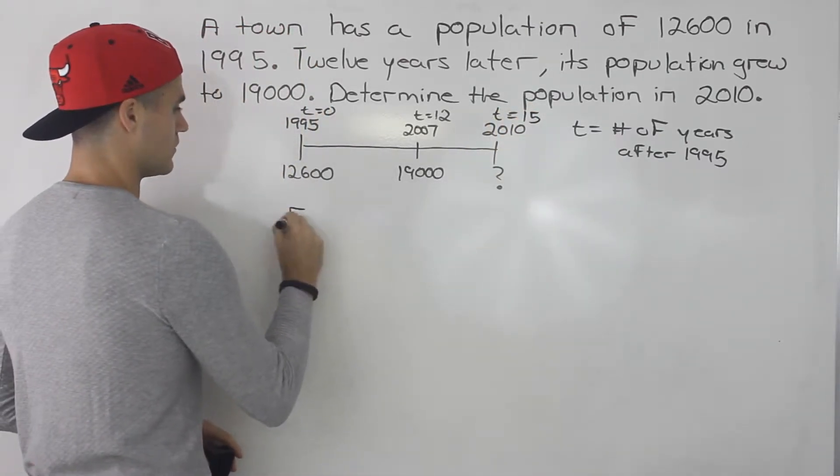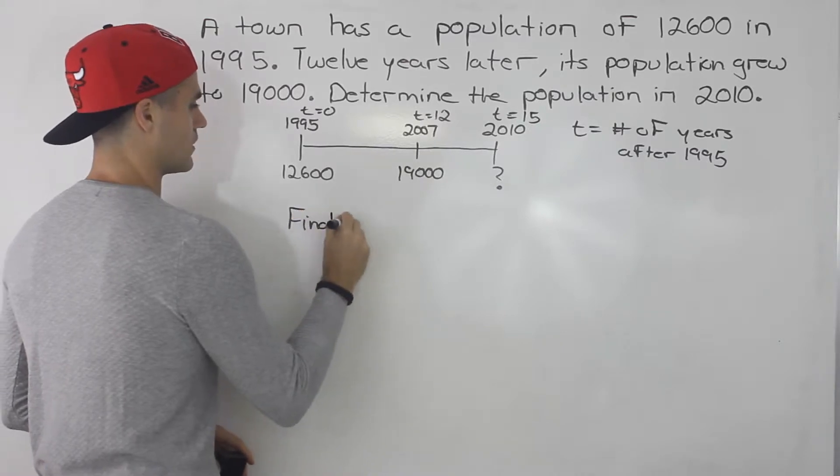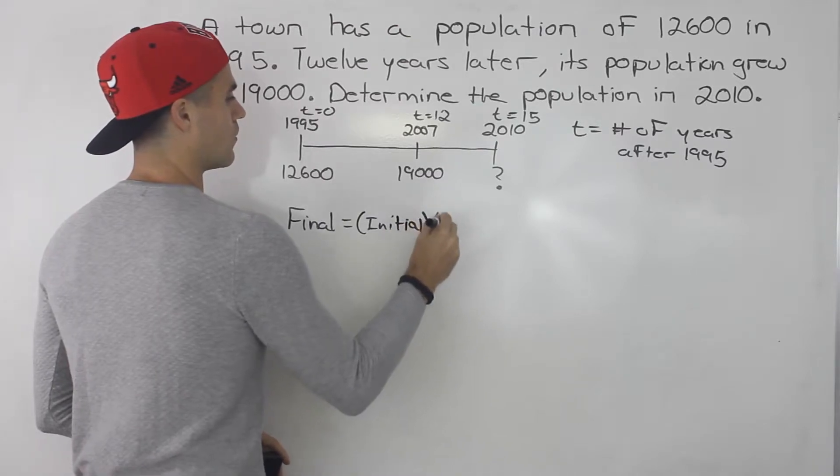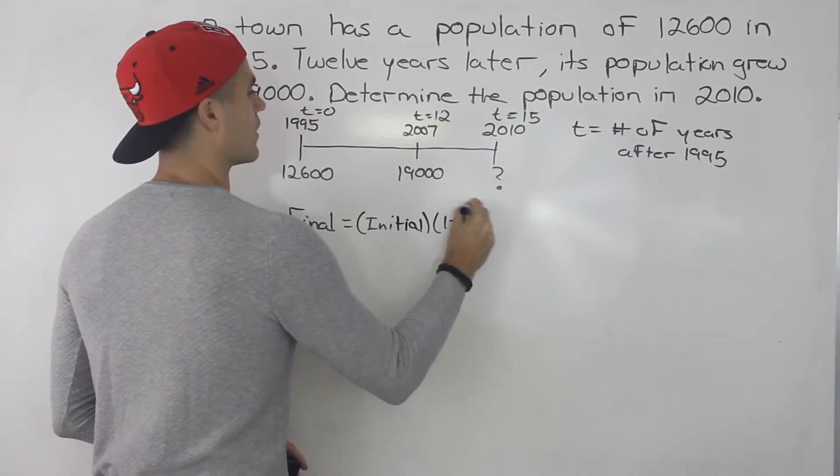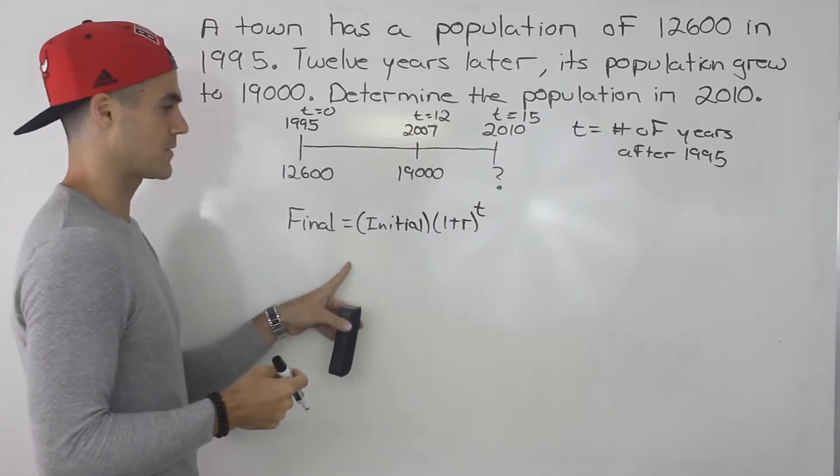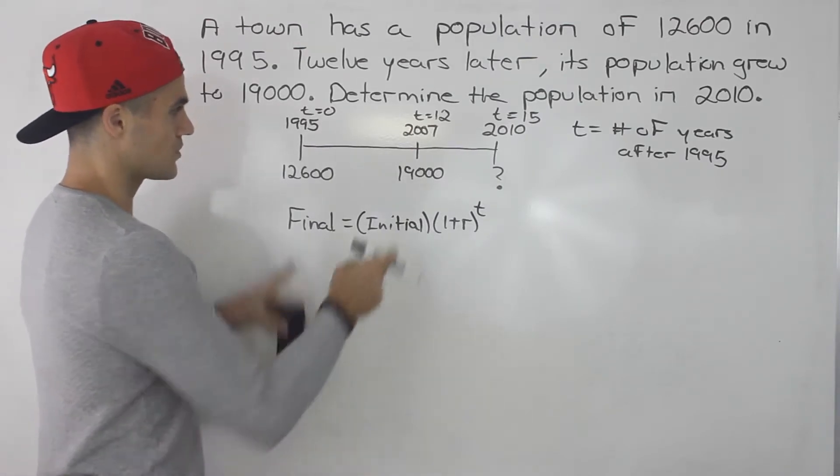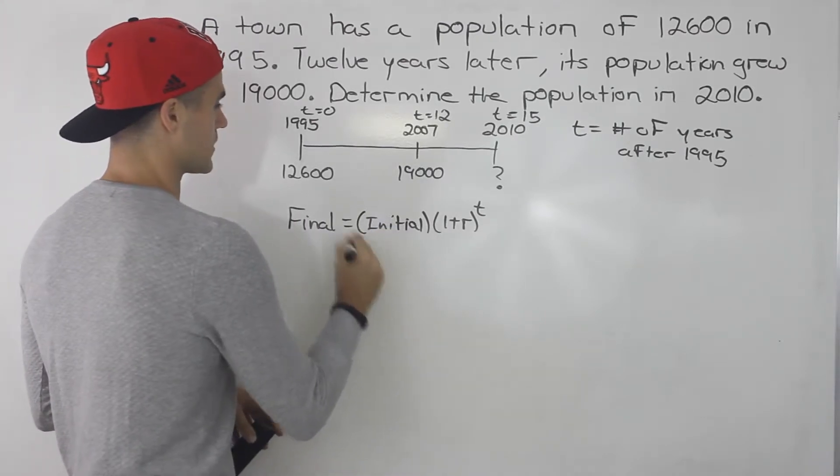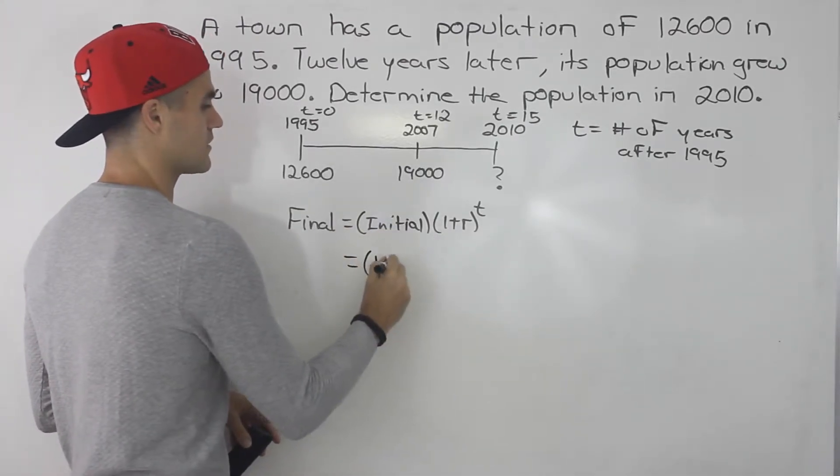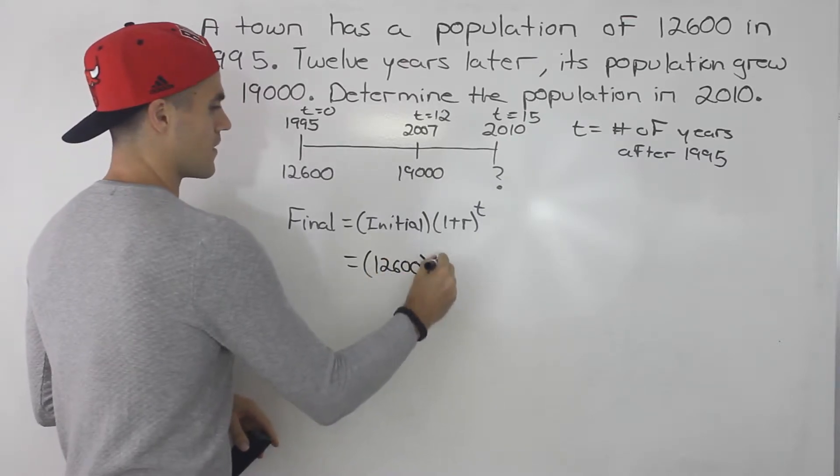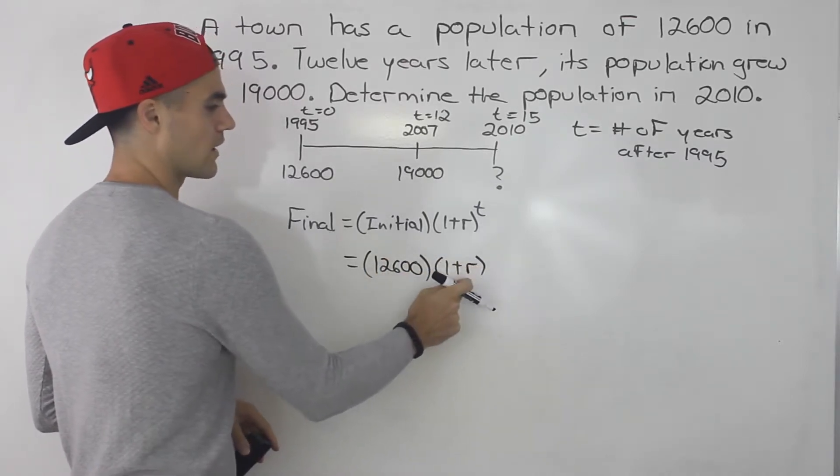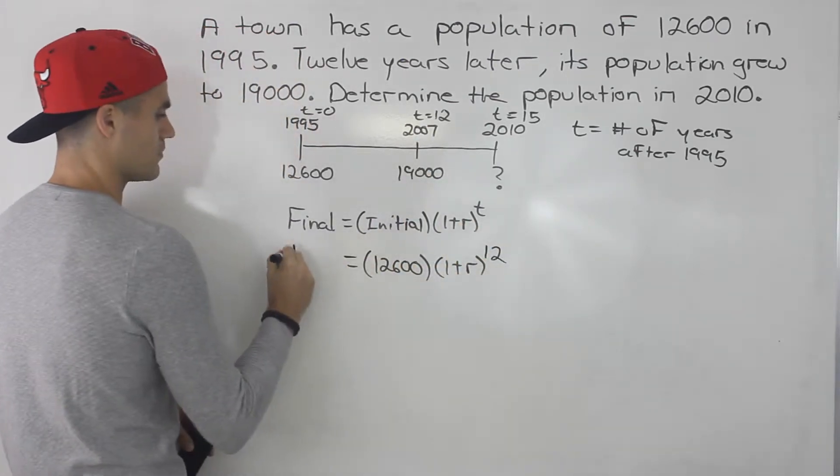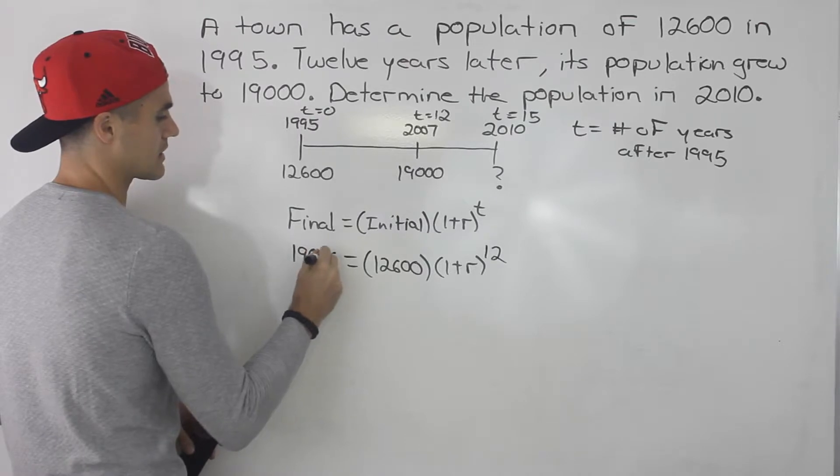Now we know in general, final equals initial times (1 plus r) to the power of t. That's the general exponential formula. So we can use these two figures here and plug them in. So we know the initial is what it starts as, so 12,600. The r, the rate of growth we're solving for, and then we know in 12 years the population is 19,000.